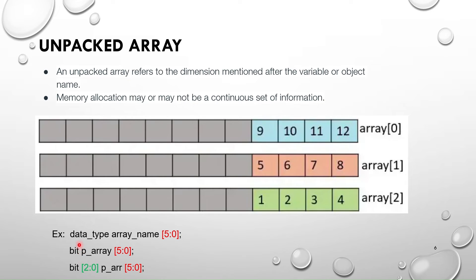Here the width is specified — scalar is single bit width, vector is multi-bit width. The second statement means array size is 6, but each index contains 3-bit data, meaning you can store values 0 through 7 (2³ = 8). In the first statement (scalar), you can only store 0 or 1. In the vector case with `[2:0]`, you can store values like 5, 6, 7, etc. Both are unpacked arrays because the dimension is declared after the variable name.